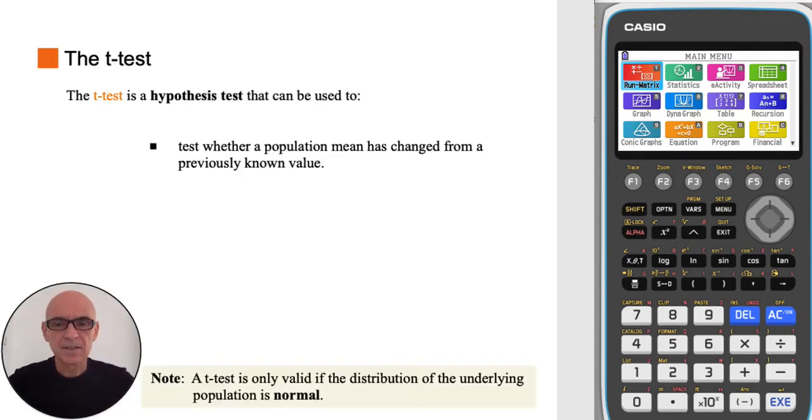A t-test is a hypothesis test that can be used to test whether a population mean has changed from a previously known value. Note that a t-test is only valid if the distribution of the underlying population is normal.